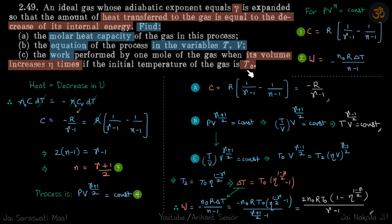If initial temperature is T₀, let's find final temperature so we can use this formula to get the work done. Using the process in terms of temperature and volume, when volume increases η times, the new temperature is this much. From here we get ΔT is this, so we'll just put the value of ΔT here to get the work done in this process.